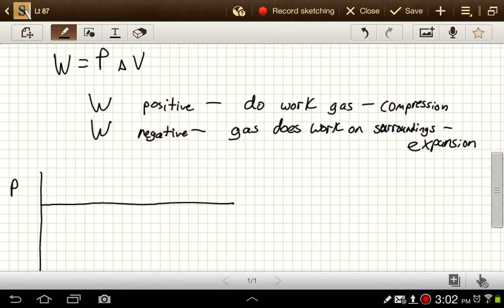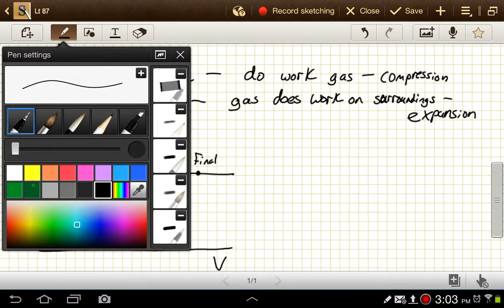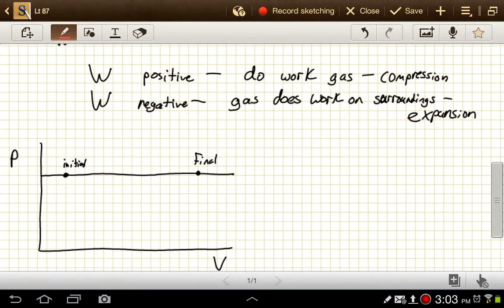P times ΔV, let's say if we started at a volume here, initial, and ended at a volume here, that's our final, then P times ΔV, that would just be the area of this rectangle right here.